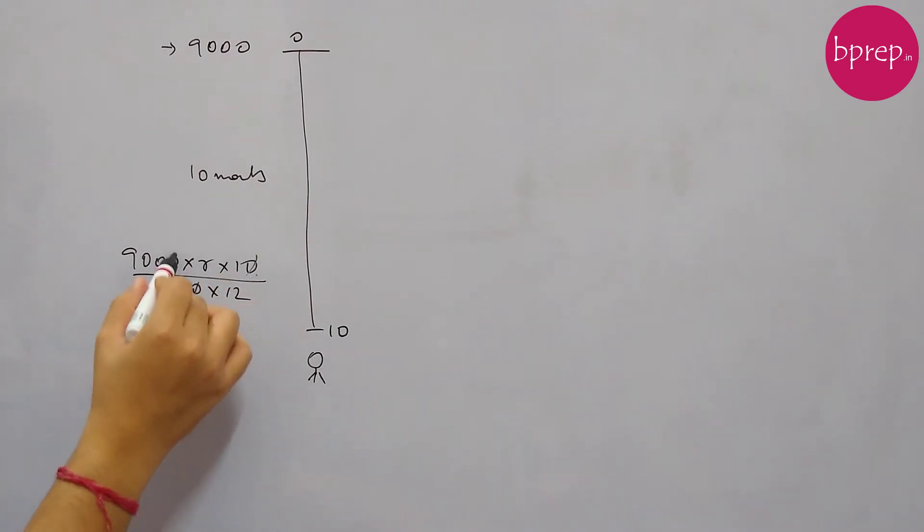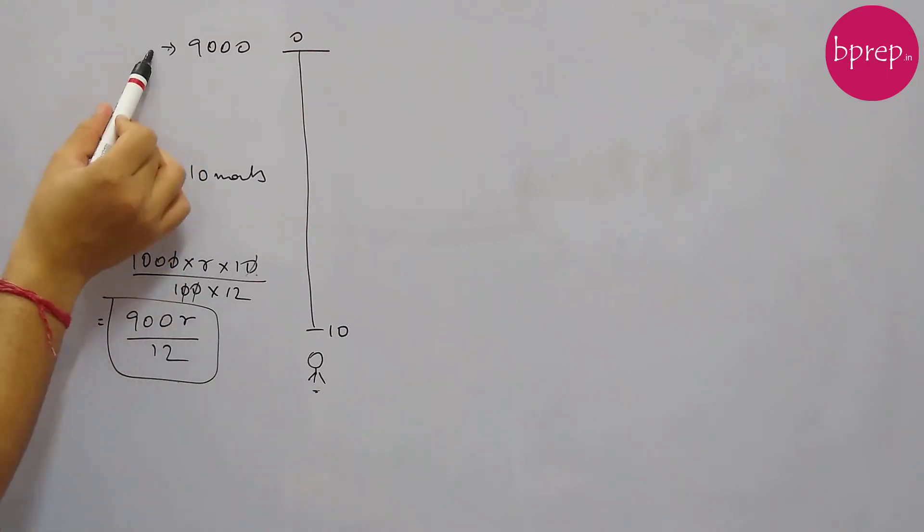So this is 10,000, so 900 R by 12. So this is the value of 9000 at this time. We are here, we are looking at the situation after 10 months when everything is already done. So 9000 taken before 10 months has a value of 9000 plus 900 R by 12 at this time.